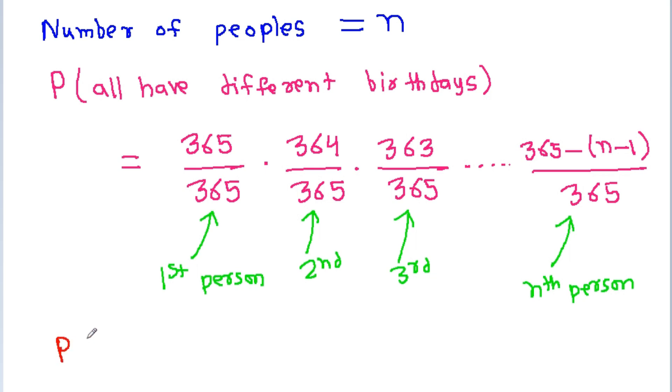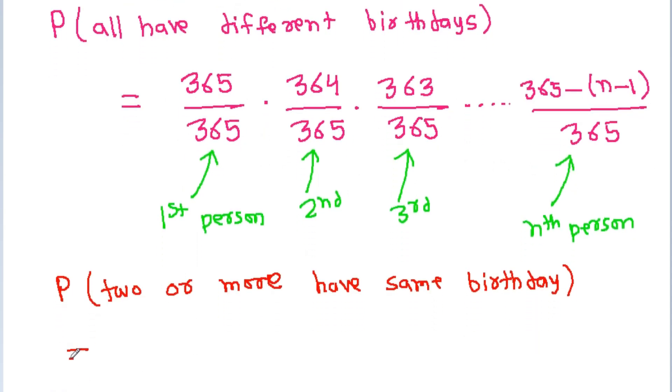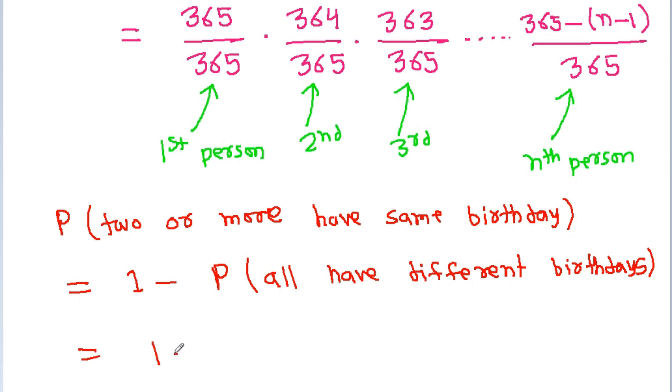Now, the probability of 2 or more having the same birthday will be 1 minus the probability of all having different birthdays. It will be 1 minus 365/365 times 364/365 times 363/365, and up to (365-(n-1))/365.